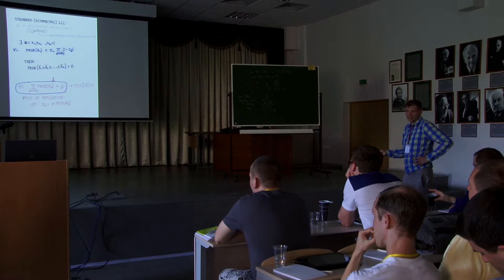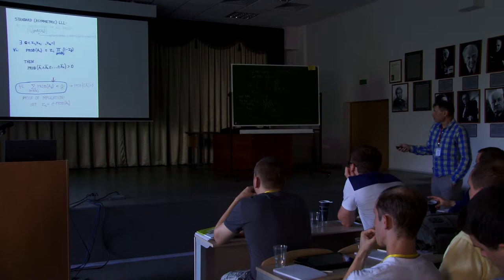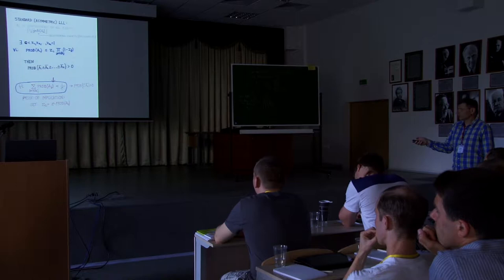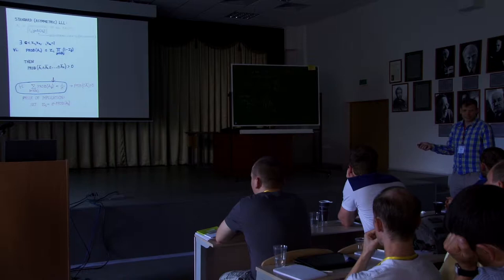This graph is useful to keep in mind, and it's also useful to describe the so-called standard Lovász Local Lemma — the standard or asymmetric version, asymmetric because not every degree is the same. Let me introduce notation: N(A_i), as you'd expect, is the neighbors of A_i. I apologize in advance because the standard LLL, if you see it for the first time, is hard to absorb.